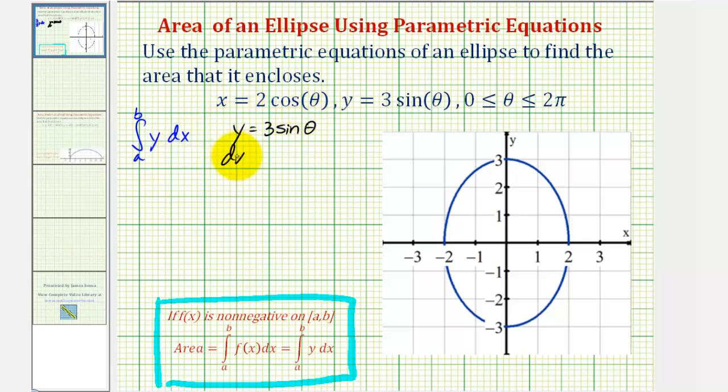So differential x would be equal to negative two sine theta d theta. So now let's perform these two substitutions into our definite integral. We would have the integral of three sine theta times negative two sine theta d theta.